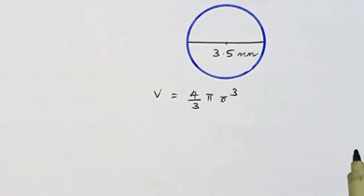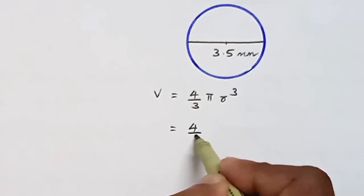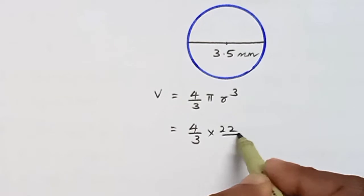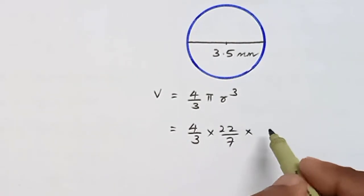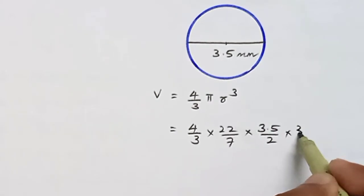Here diameter is 3.5 mm, so radius will be 3.5 by 2 mm. So 4 by 3, value of pi is 22 by 7, radius is 3.5 by 2 times 3.5 by 2 times 3.5 by 2.